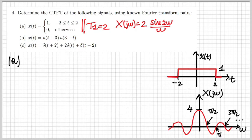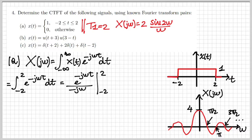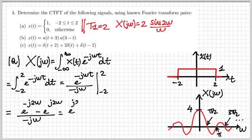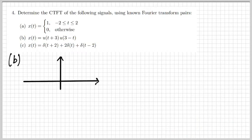If I didn't recall that Fourier transform pair, I could have calculated X(jω) using the definition — the Fourier integral — by plugging in x(t). The integral becomes a definite integral between minus two and two, yielding (e^(−j2ω) − e^(j2ω))/(−jω), which simplifies to 2 sin(2ω)/ω — exactly the same result.